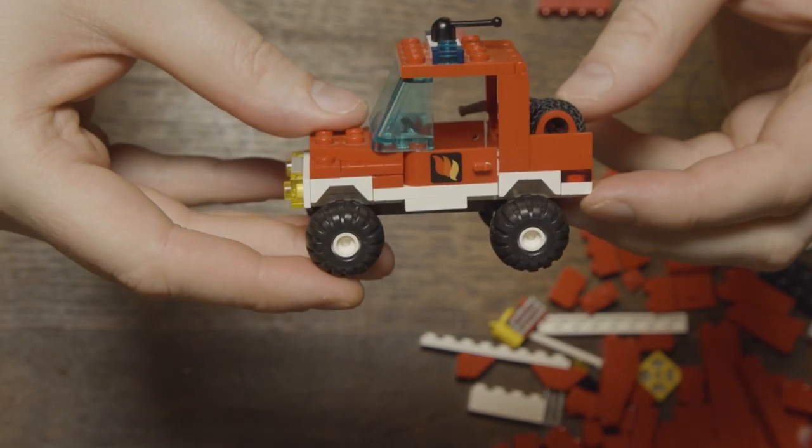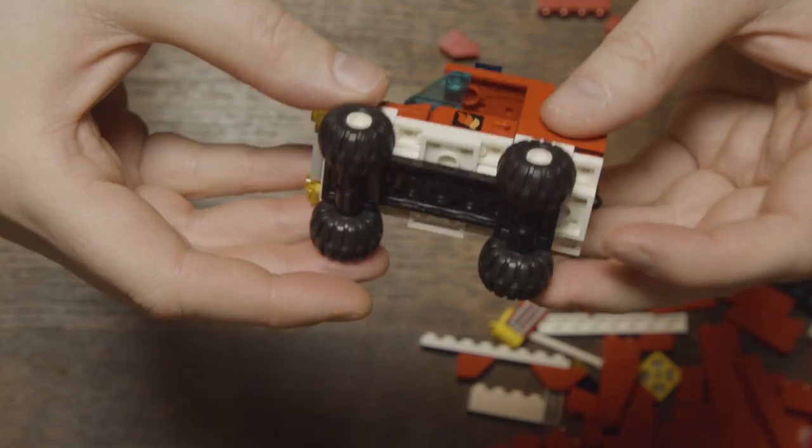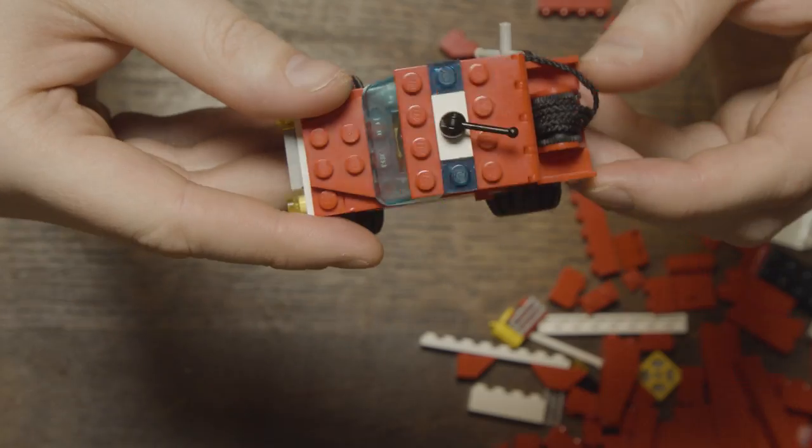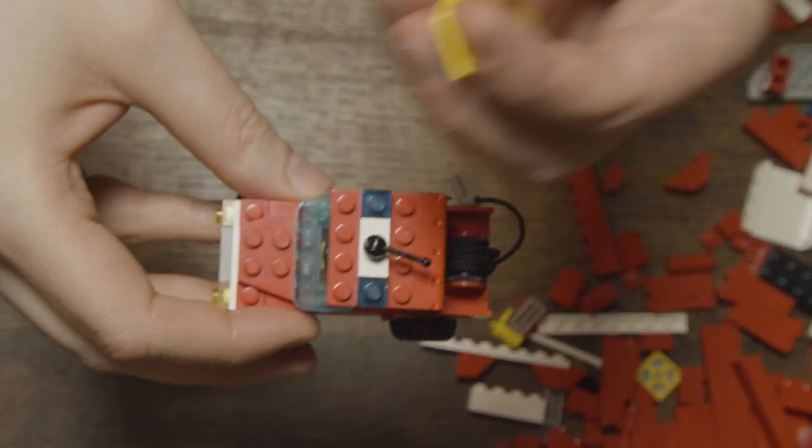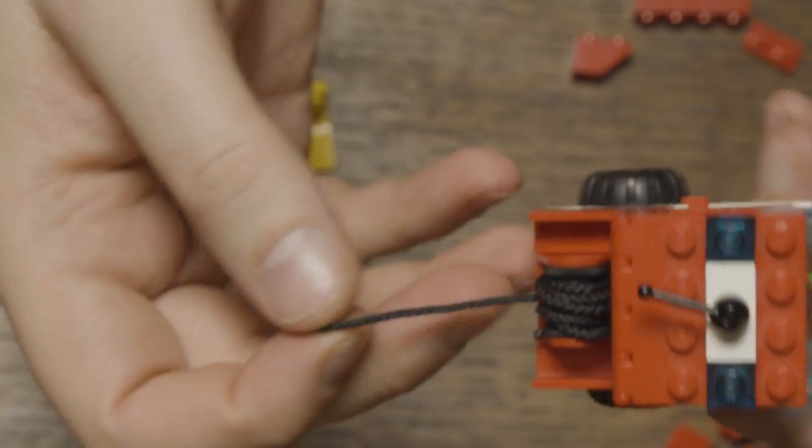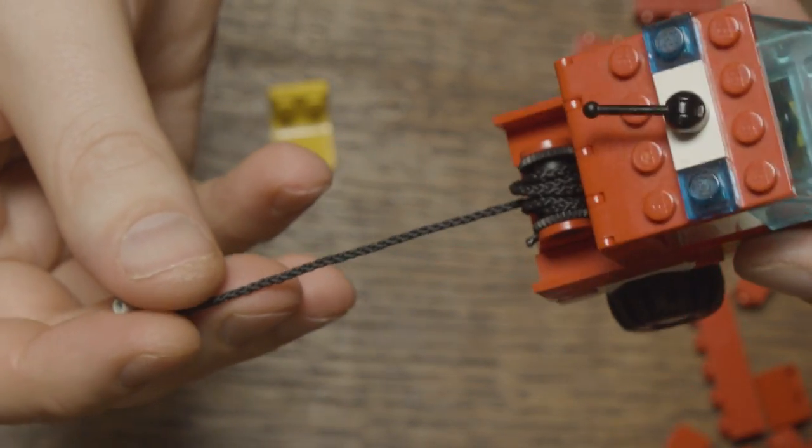This car has a nice design and what is definitely cool are the balloon tires and the fire print on the doors. Personally I find it a bit small and I wonder why a yellow seat for the driver could not be provided here. I also find it strange that there is a hose but no facilities for water such as a tank or fire hydrant connection.